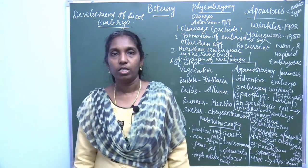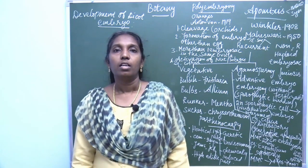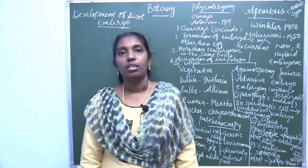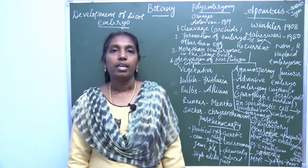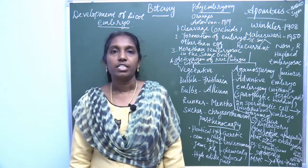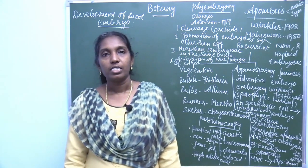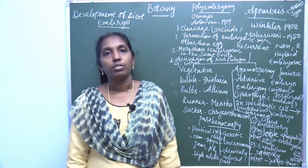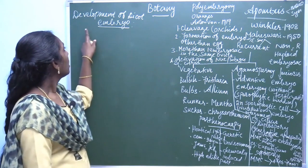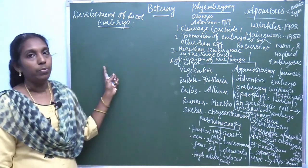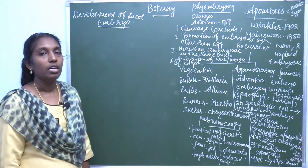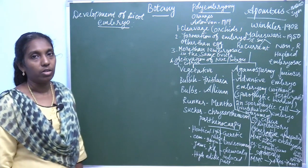Good morning and welcome back to botany class. Let's quickly review what we learned in the previous class: types of style, entry of pollen tube in the embryo sac, double fertilization, triple fusion, events of fertilization, types of endosperm, and post-fertilization changes. This class, let's start from development of dicot embryo, and we are also going to learn the structure of dicot and monocot seed.